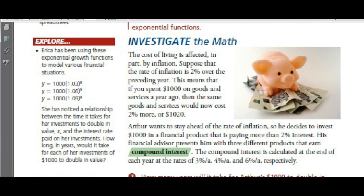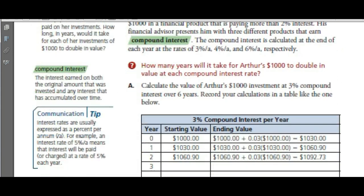If inflation is 2% per year, then we end up with compound interest. Compound interest is the interest earned on both the original amount invested and any interest that has accumulated over time. If you have a savings account, you're likely dealing with compound interest. They pay you for the use of your money — you leave $1,000 in the bank and they pay you for the privilege of using it.